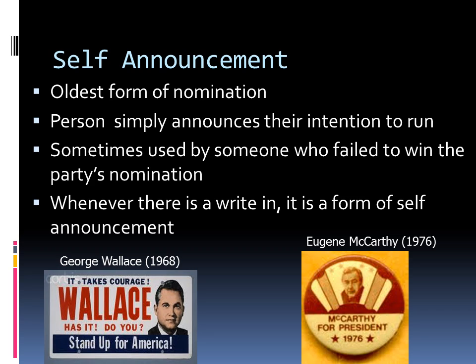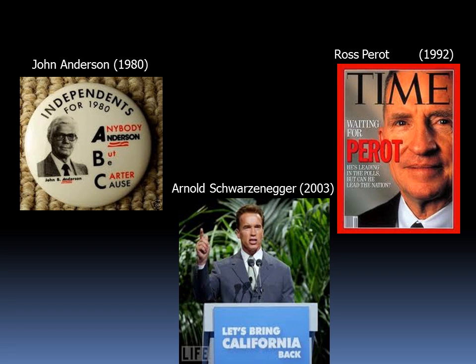In recent history, four prominent presidential contenders have made use of the process: George Wallace, who declared himself to be the American Independent Party's nominee in 1968; and independent candidates Eugene McCarthy in 1976, John Anderson in 1980, and Ross Perot in 1992. All of the 135 candidates who sought to replace Governor Gray Davis of California in that state's recall election in 2003, including the winner, Arnold Schwarzenegger, were self-starters.